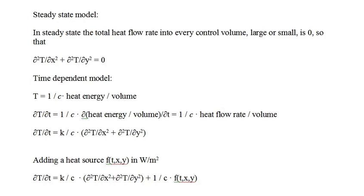We've done almost all the work to derive the time-dependent model, so we'll do that as well. Temperature equals one over C times heat energy per unit volume, so the derivative of temperature with respect to time equals one over C times the derivative of heat energy per unit volume with respect to time. The derivative of heat energy per unit volume with respect to time equals the heat flow rate per unit volume. So the time derivative of temperature equals K over C times the second partial derivative of temperature with respect to x plus the second partial derivative with respect to y. Adding a heat source f(t, x, y) with units of watts per meter squared adds f(t, x, y) over C to the time derivative of temperature, giving the full model shown at the bottom of the page.